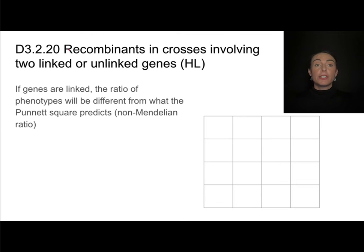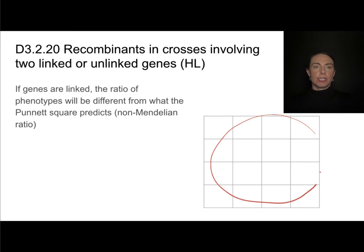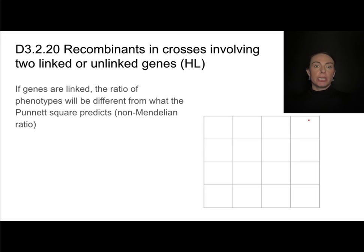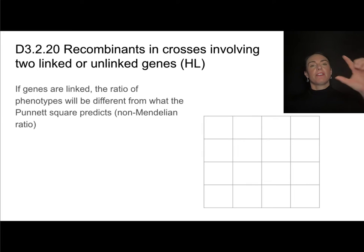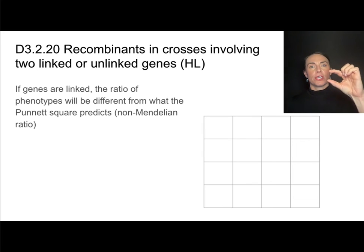If the genes are linked, we can still do a Punnett square. But what the Punnett square predicts and what we will actually get are going to be different. We're going to get a non-Mendelian ratio because some of those recombinants are going to be less likely, due to the fact that they rely on crossing over between the linked genes on the chromosome.